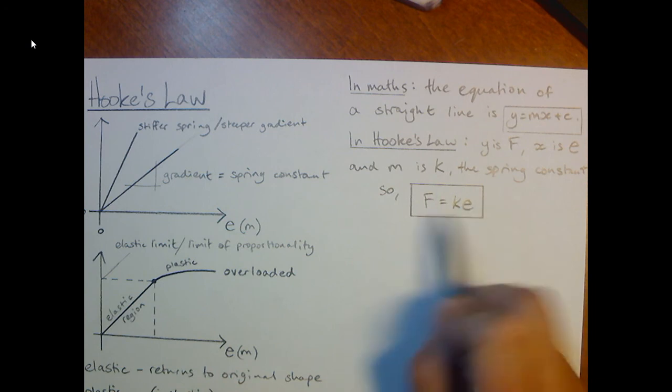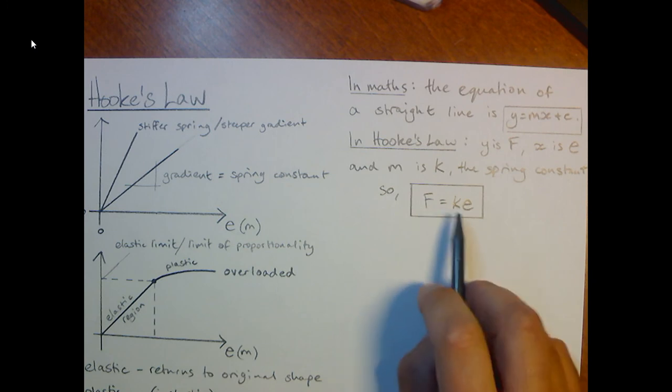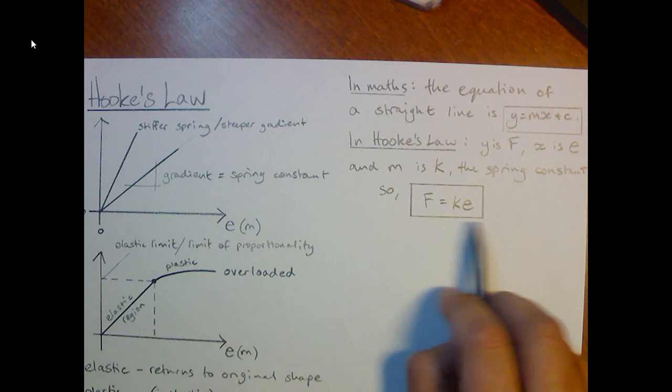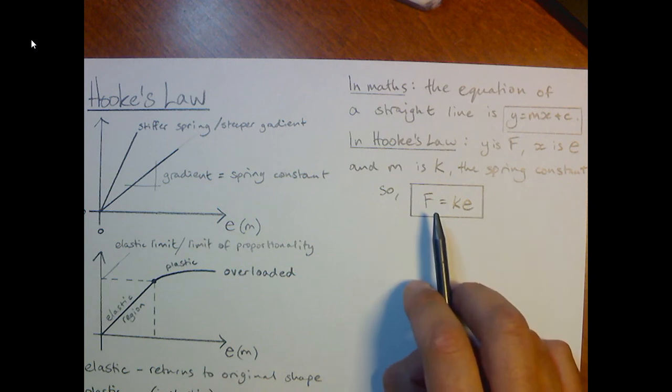If we know the spring constant and we know how much force we're applying to spring, we know how far it will extend. So we rearrange the equation for e. If we don't know the force that's required, but we do know the spring constant, we know how long we want the spring to stretch to, then we can use this equation in its natural form to find the missing force. So we use it in the same way that we use all of our equations in physics.